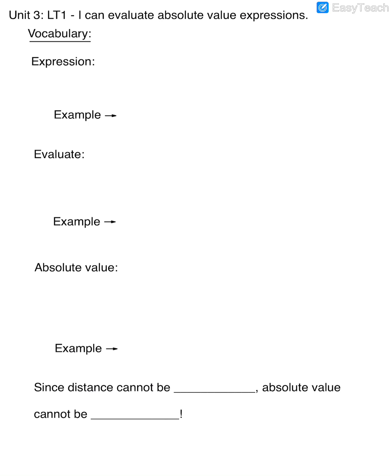There's some vocab here that we need to revisit. Some of these we've already talked about, but we haven't talked about what an absolute value is yet this year, so we're going to go ahead and start talking about that too. An expression — we've had expressions before, especially in our first unit — is a reminder that an expression consists of sums and/or products of numbers and variables.